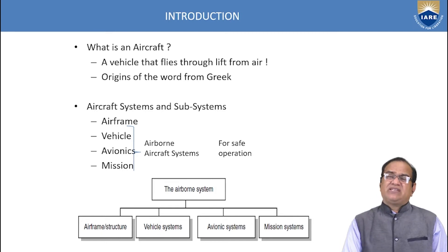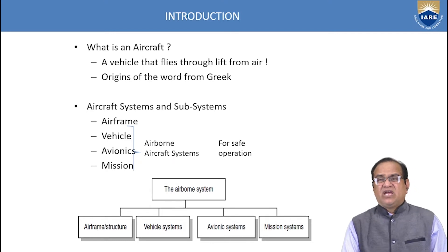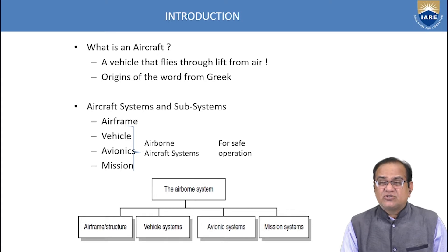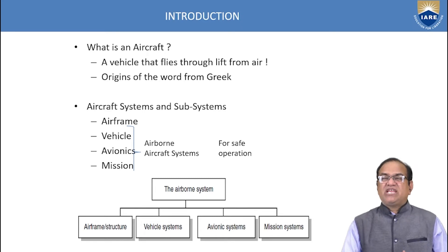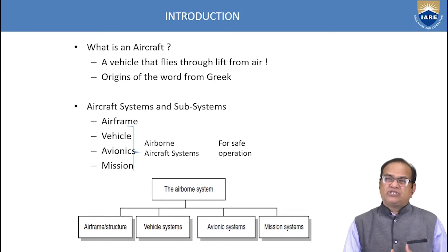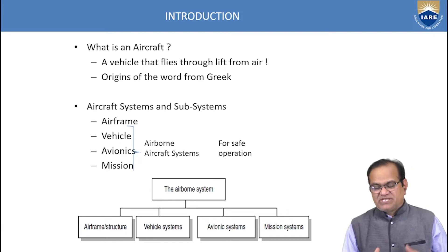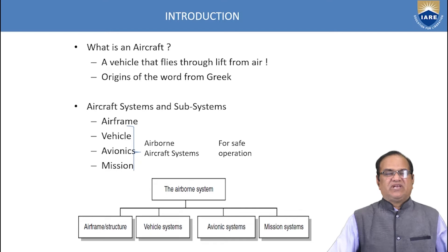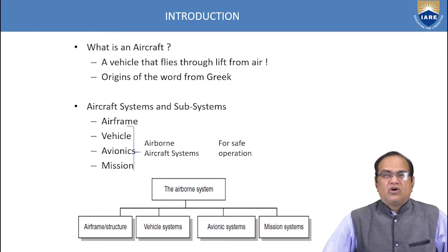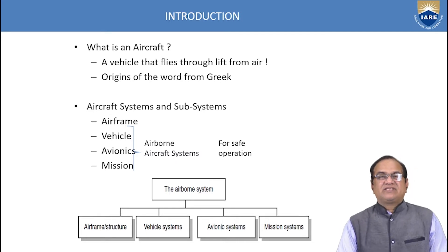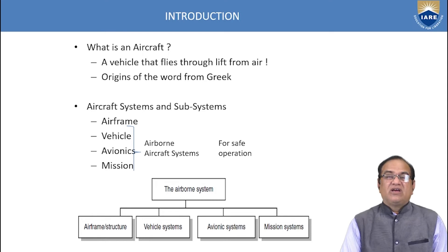Next are mission systems. When an aircraft goes on a mission, that mission must be fulfilled. To achieve it we need special equipment called mission equipment. For example, helicopters in the Indian Navy, Air Force, or Army have a basic war role but are also used for emergency operations like flood, fire, and earthquake response.